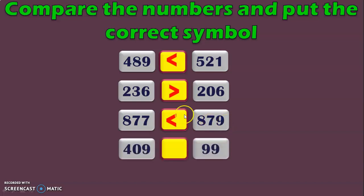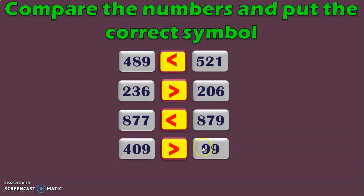Let us do one more example. Here we have one 3-digit number to be compared with a 2-digit number. We know that 3-digit numbers are greater than 2-digit numbers, so we put the greater than symbol, which means 409 is greater than 99.